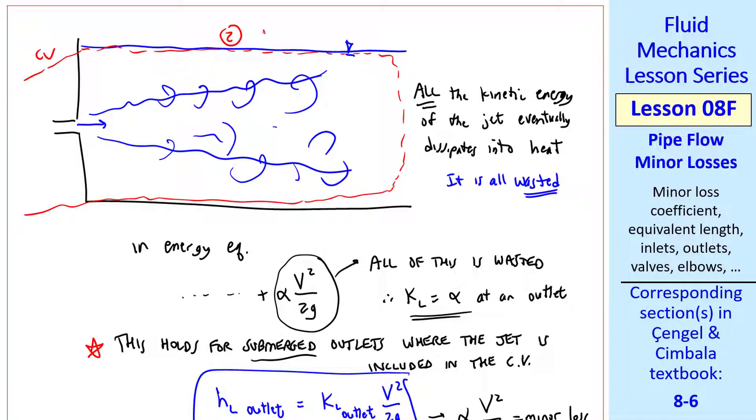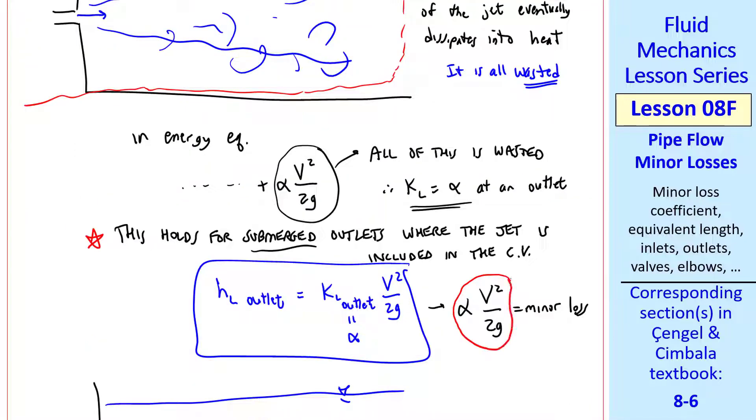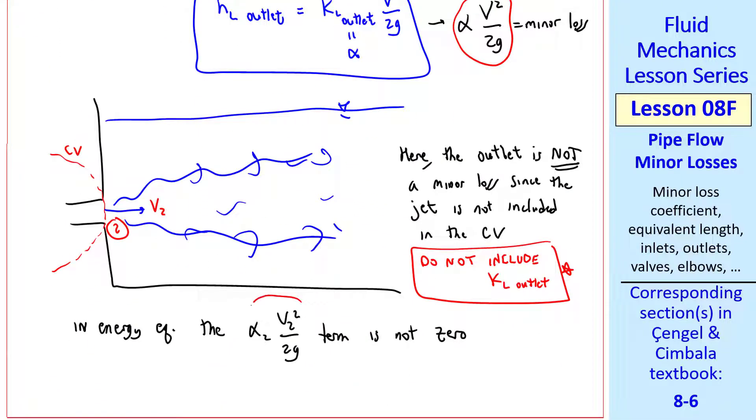So this term treated as a minor loss is the same as this term treated as the kinetic energy flow out of the control volume.